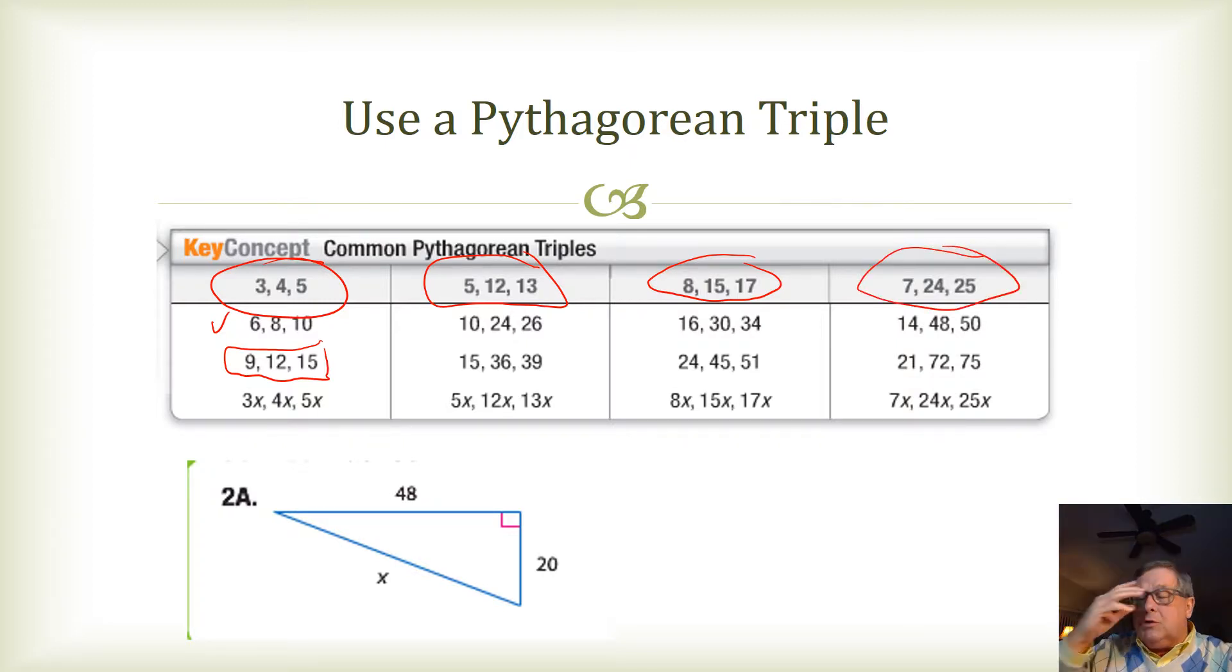And we can use those to find the missing measure of the side of a right triangle. Now, quite honestly, I've got to be honest with you. To me, I'd just soon use Pythagorean theorem, just like this one that we would be looking at here. If I set that up in the Pythagorean theorem, I'd have 48 squared plus 20 squared equals C squared because X is the hypotenuse. And that assumes the value of C.